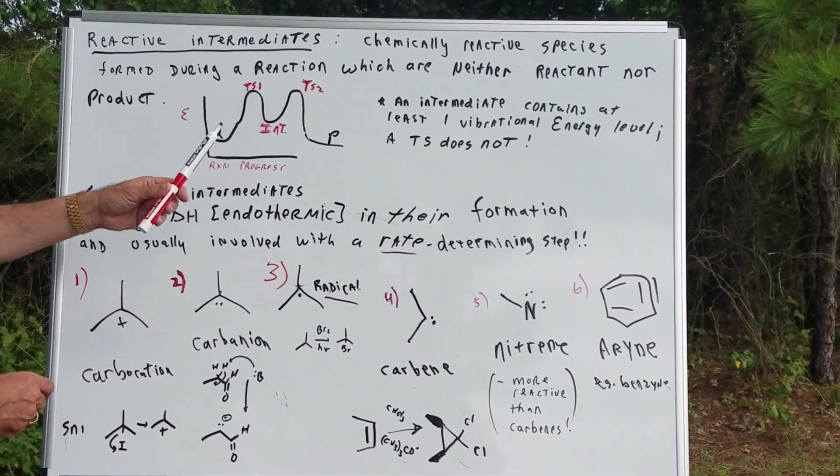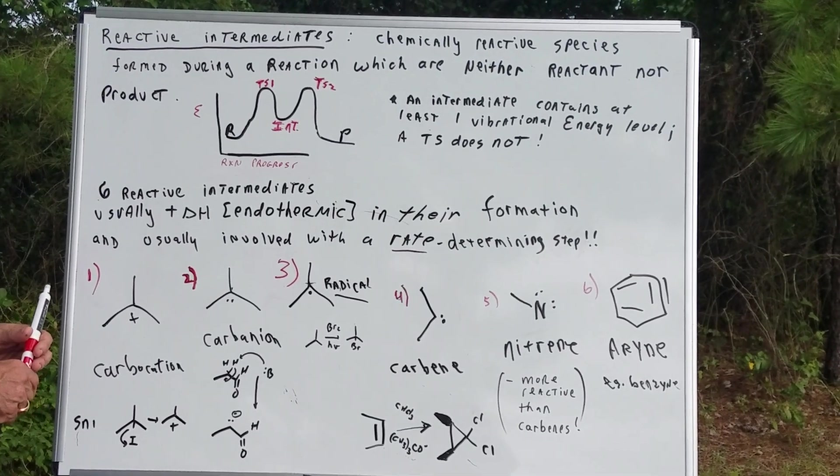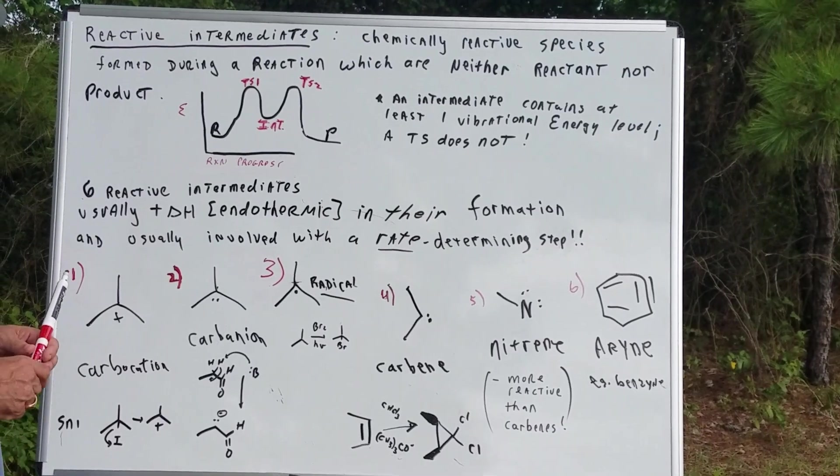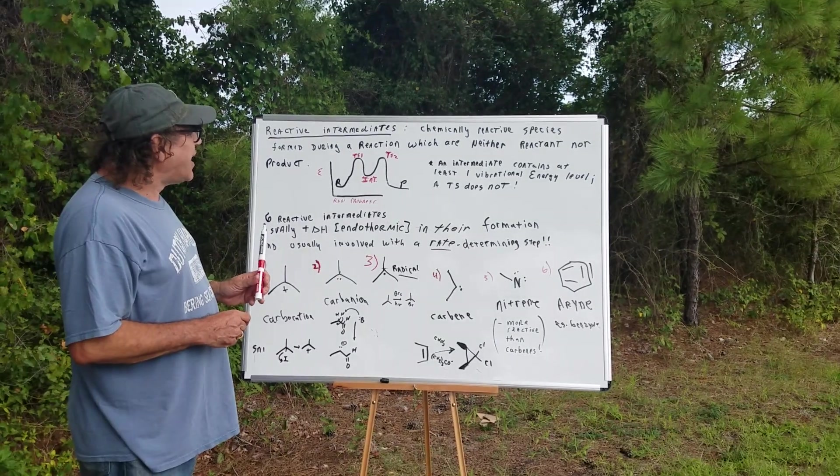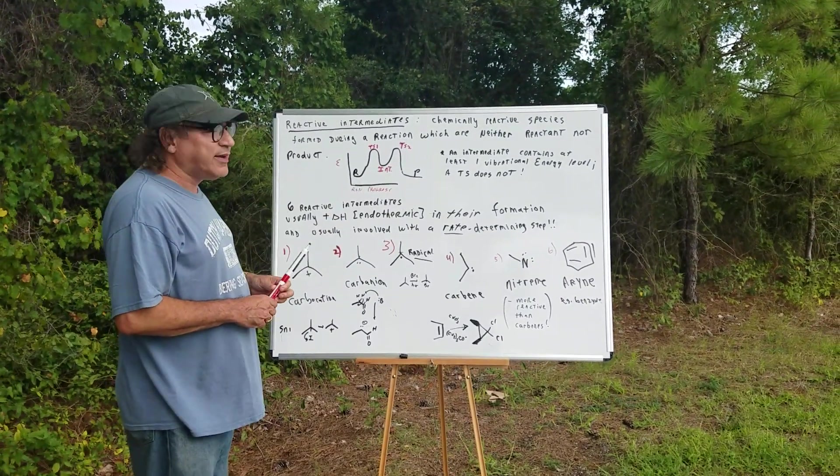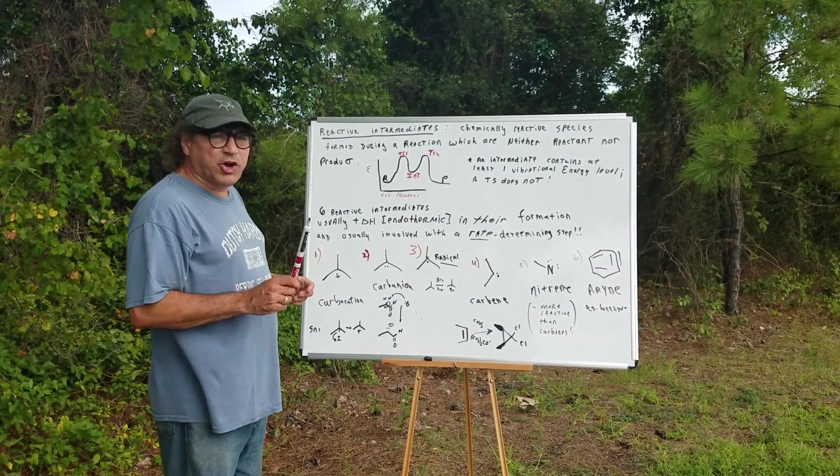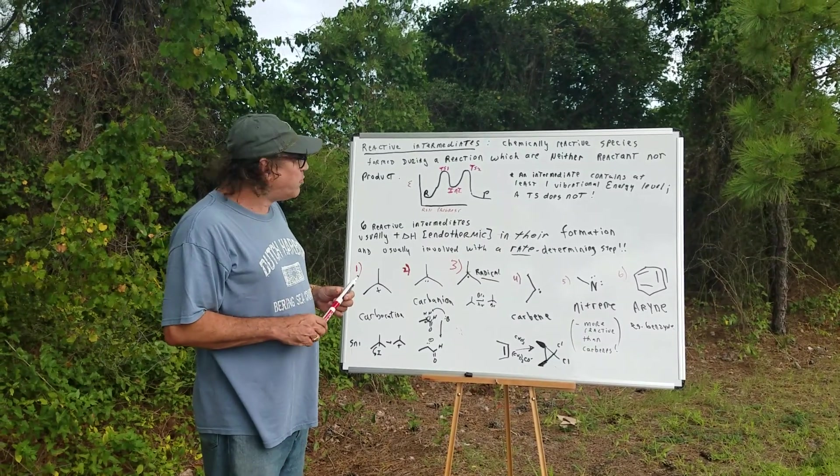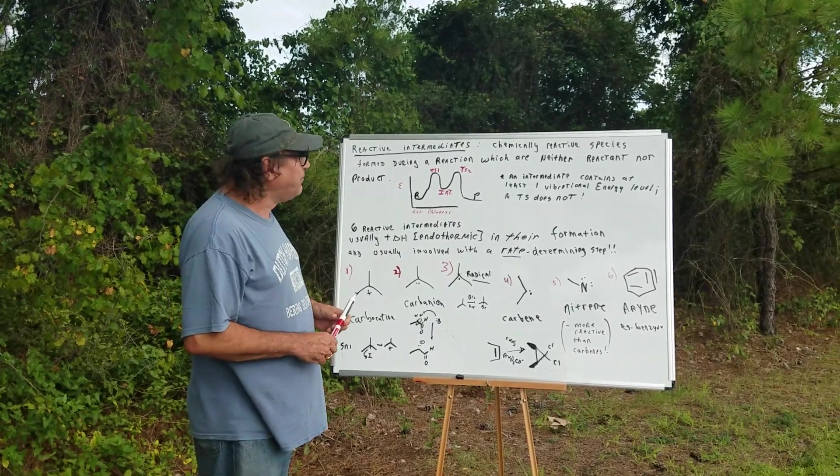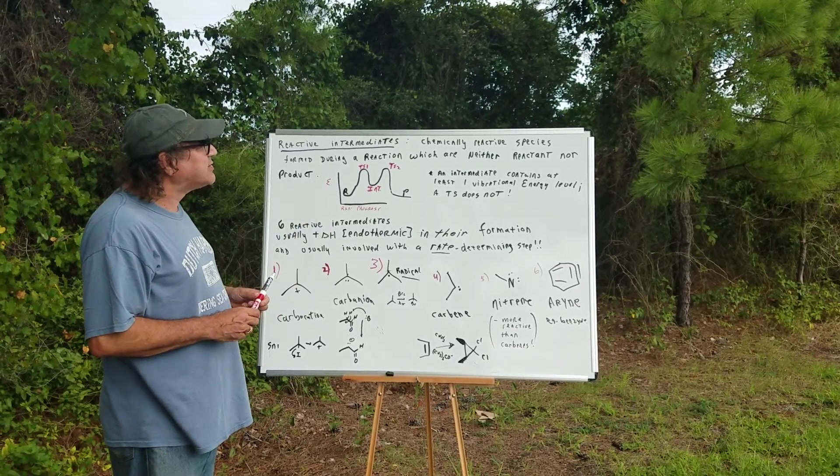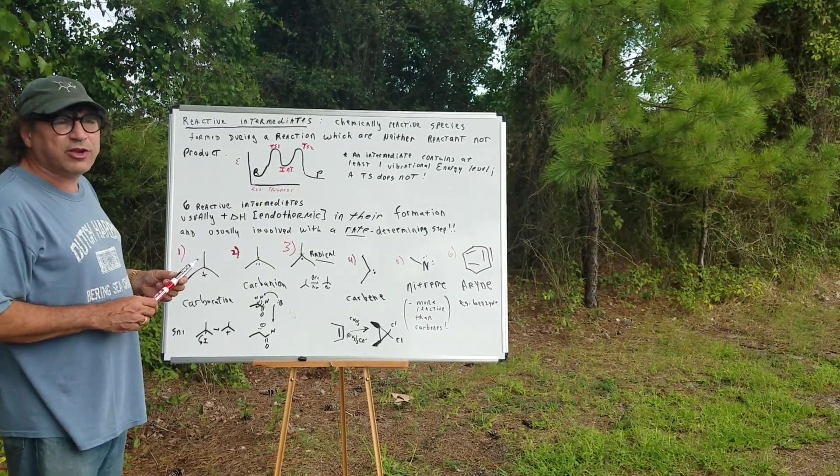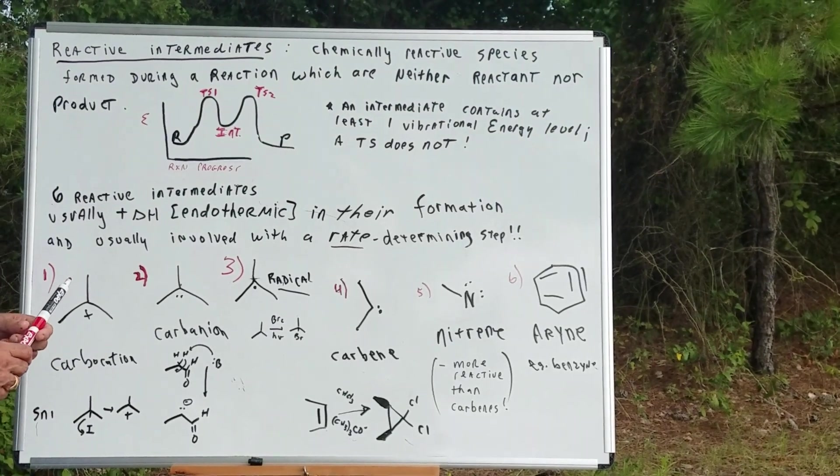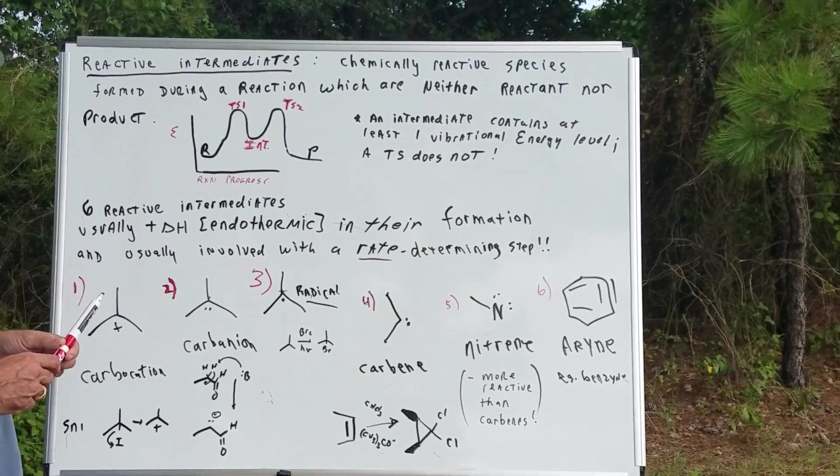Now, remember, you should be able to do this diagram and understand it for any exam you'll come across. You should also understand that an intermediate could sometimes be isolated where a transition state cannot. An intermediate contains at least one vibrational energy level and a transition state has no vibrational energy levels that we can detect.